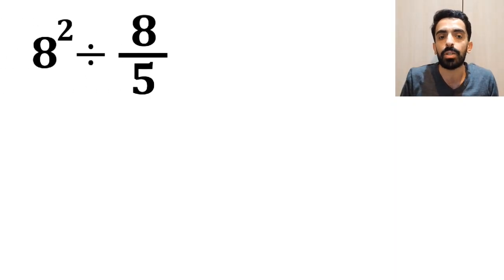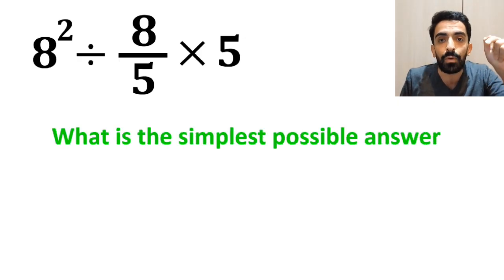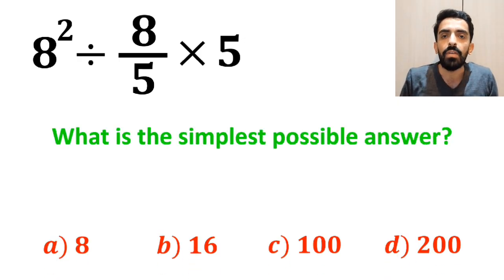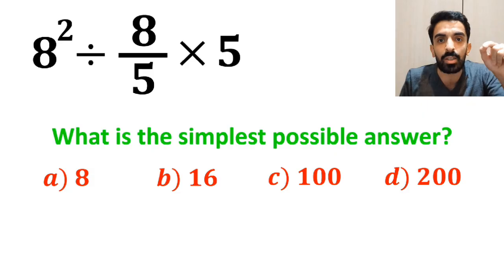If we have the expression 8 to the power of 2 divided by 8 over 5 multiplied by 5, then what is the simplest possible answer for this expression? Which option do you believe is the correct answer to this question?